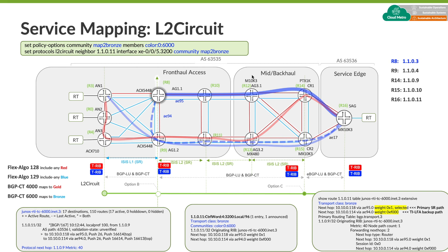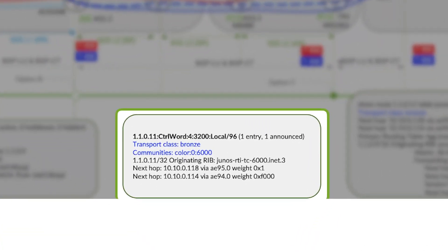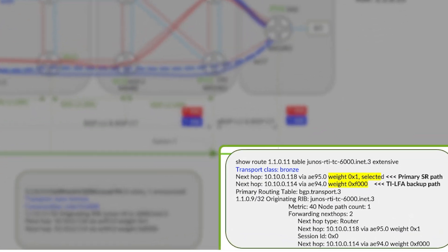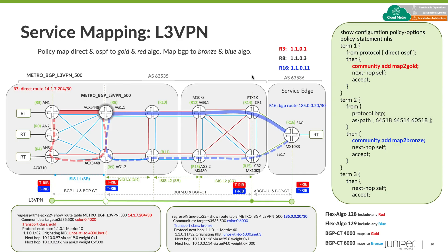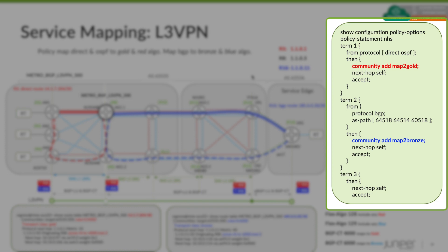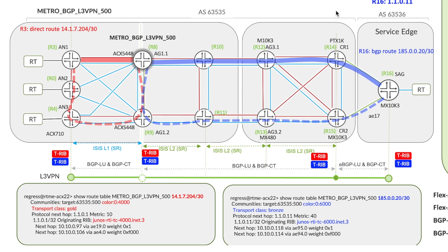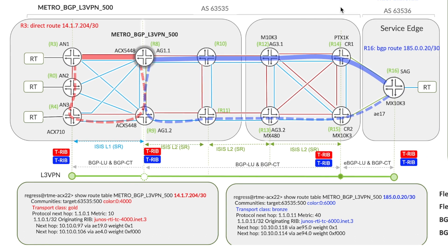For L2 circuit it's literally two lines of configuration: first we create the extended color community, then associate it to the L2 circuit. At this point the L2 circuit is now signaled with transport class bronze, and the path selection follows this same logic for both primary and TI-LFA backup. For L3VPN, we define a policy that maps services at a prefix level — direct and OSPF routes map to gold (red paths), while BGP routes matching particular attributes map to bronze (blue paths). In the output you can see the prefixes are clearly associated to distinct next hops based on our color mapping.